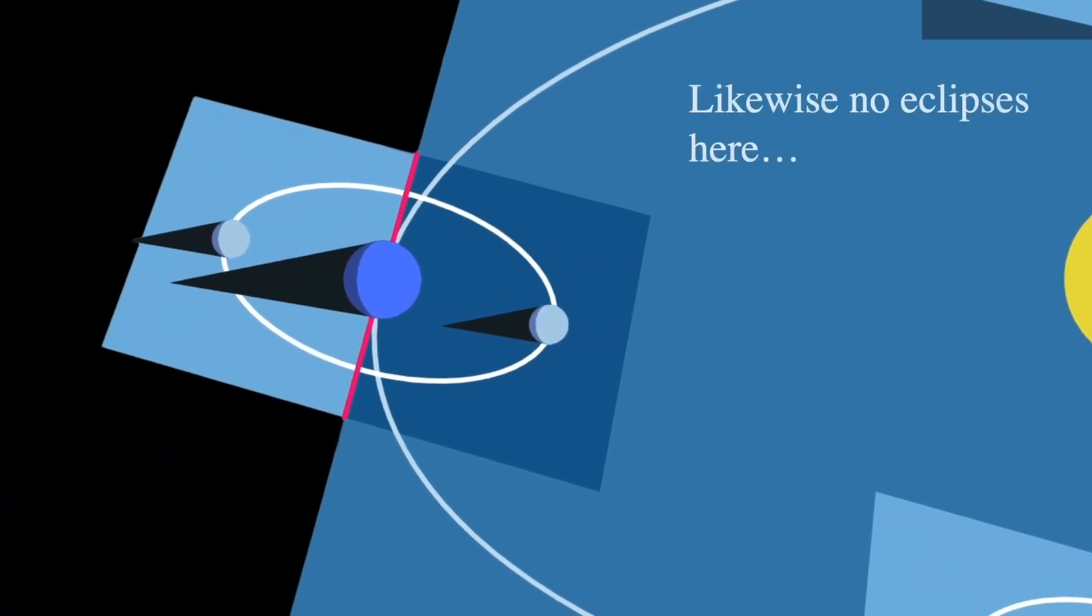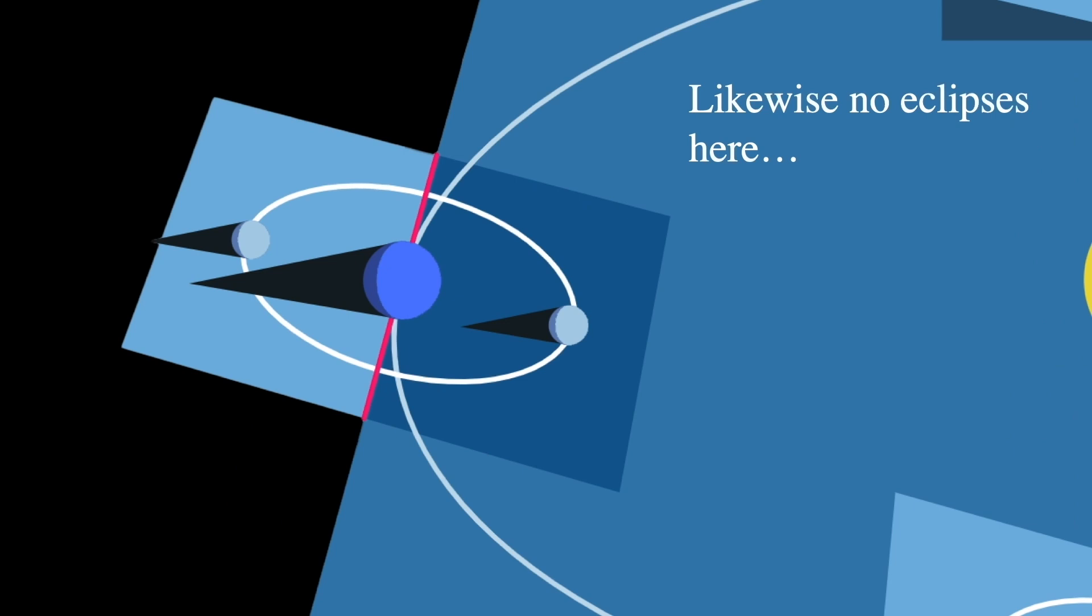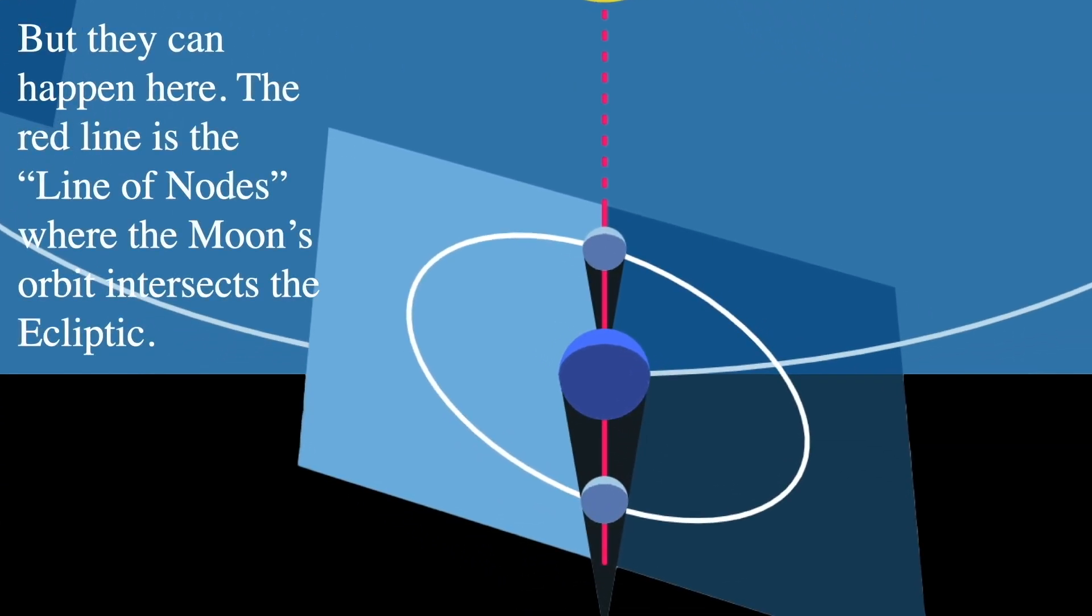Now if we go six months later, again, there won't be any eclipses there because the moon is either below the ecliptic or above it. And now if we get to this point when the nodes line up and point at the Sun, they can happen here.